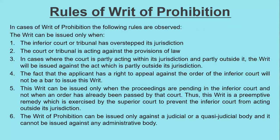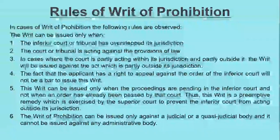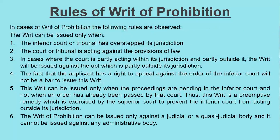The rules of the writ of Prohibition are as follows: The writ can be issued only when the inferior court or tribunal has overstepped its jurisdiction and is acting against the provisions of law. In cases where the court is partly acting within its jurisdiction and partly outside it, the writ will be issued against the act which is outside its jurisdiction. The fact that the applicant has a right to appeal against the order of the inferior court will not be a bar to issuing this writ. The writ of Prohibition can be issued only against a judicial or quasi-judicial body, not against any administrative body. And this writ can be issued only when proceedings are pending in the inferior court — not when an order has already been passed — because once the judgment comes, you have to use Certiorari to cure the mistake, not Prohibition.